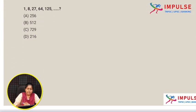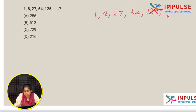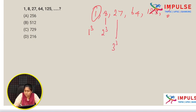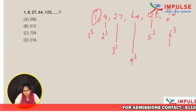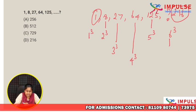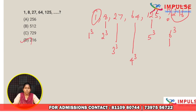Next question: 1, 8, 27, 64, 125, ?. The pattern is cube numbers: 1 is 1 cube, 8 is 2 cube, 27 is 3 cube, 64 is 4 cube, 125 is 5 cube. So the next number is 6 cube, which is 216. The answer is option D, 216.